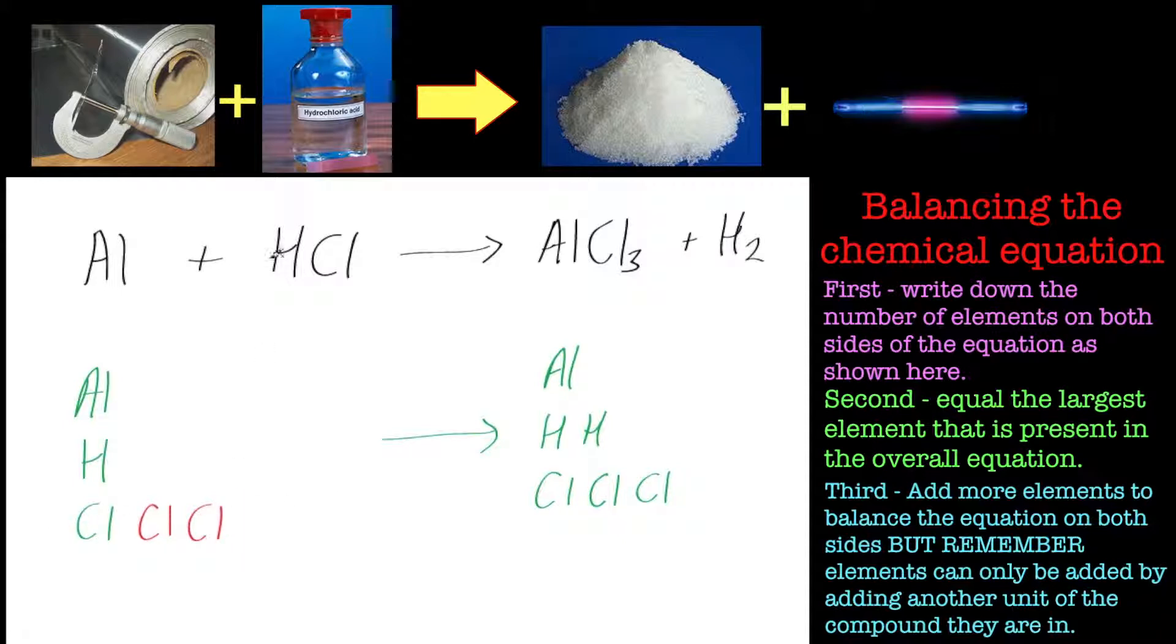We've got three chlorines here. That's balanced. So we need to balance the real equation. So we need to add two more chlorines. The only way we can do that is by adding HCl, because that's where the chlorines are coming from. So we add one HCl. That gives us two chlorines. Two HCl gives us three chlorines.